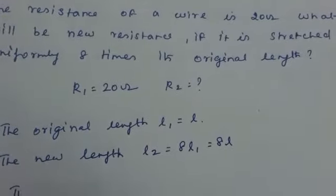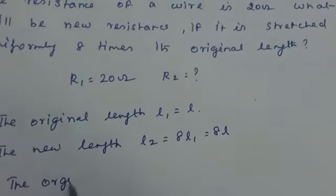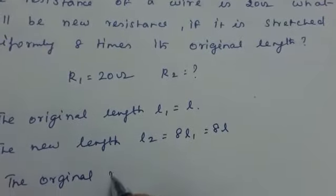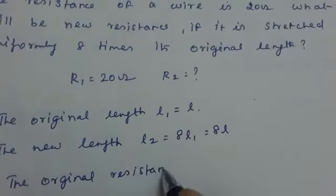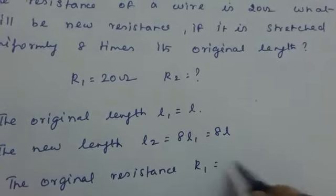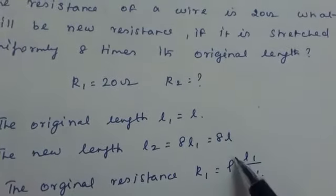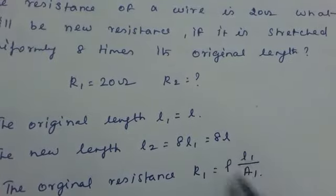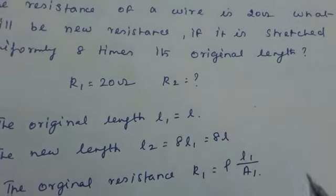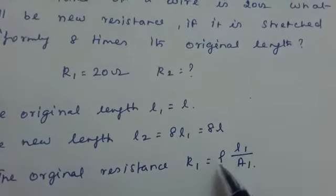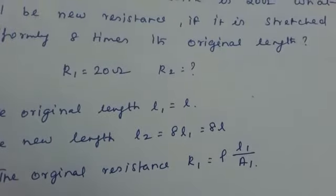Now, the original resistance we can write using the formula. The original resistance R1 is equal to rho into L1 by A1. Why I am not writing rho 1? Because the specific resistance is same for the same material. So R1 is equal to rho into L1 by A1.